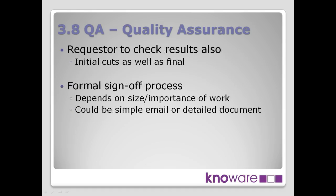Not only should a peer reviewer check the work, but the person who requested it — whether individually or someone on their team — should also be checking the results, and not just at the very end. As we talked about with the iterative process, as someone develops an initial cut or first version, they should check it themselves, then get the requester or business area to have a look at the preliminary results — is it laid out appropriately, are these the sort of numbers expected? — so that by the final result you know you're on track.